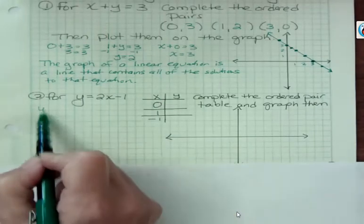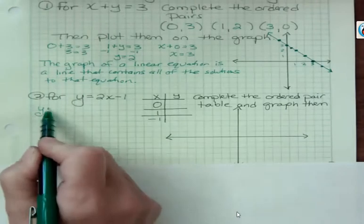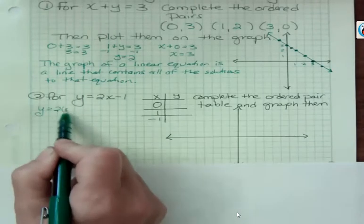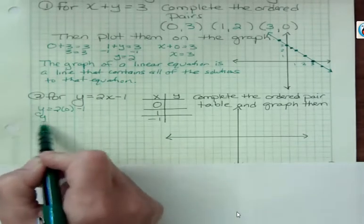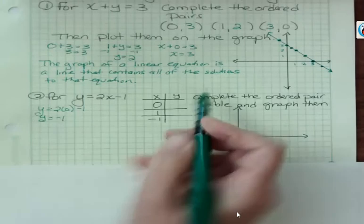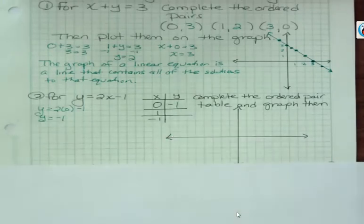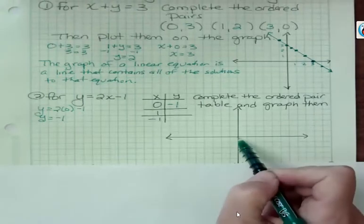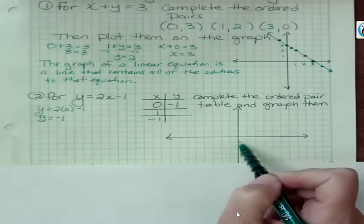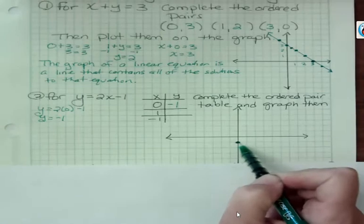So for the first one, if x is 0, you're going to get 2 times 0 minus 1, and that's going to mean that y is negative 1. So that's the ordered pair, 0, negative 1, when I get ready to graph it. In fact, I could graph that now, if x is 0, I don't go left or right, but I go down 1, there's that first point.